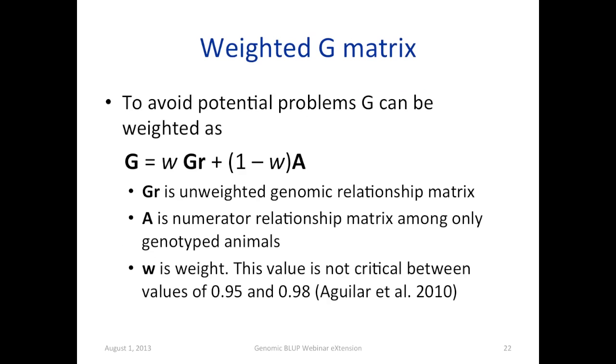So to avoid potential problems, the G matrix can be weighted as given in the formula. GR is unweighted genomic relationship matrix. A is the numerator relationship matrix among only genotyped animals. So it is actually a subset of A. And then W is the weight. And this is a constant, actually. And Aguilar et al. suggested that any number you type between 0.95 and 0.98, you get very similar results. So it's not really critical if you choose a constant between 0.95 and 0.98.